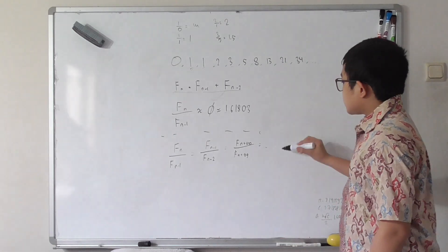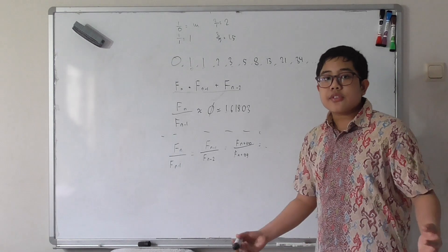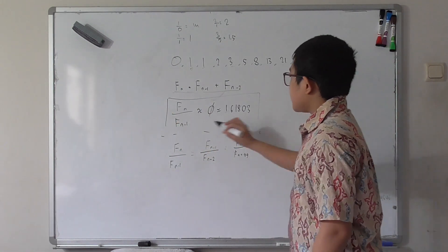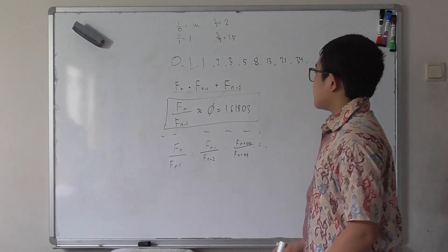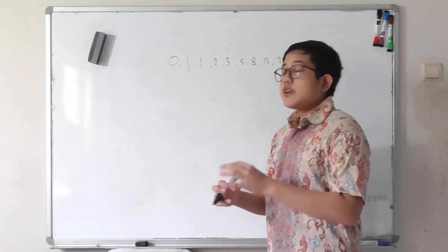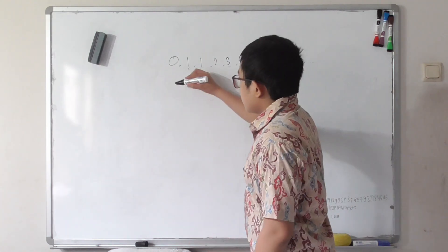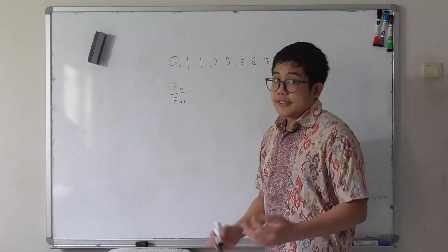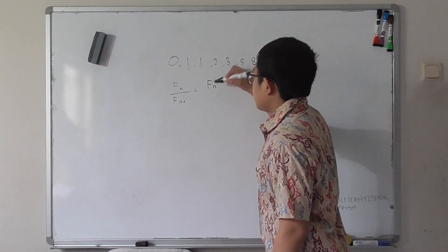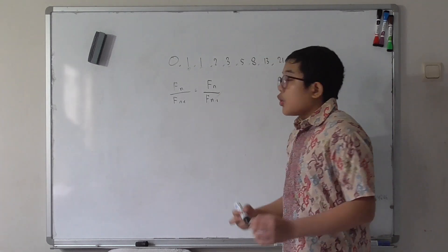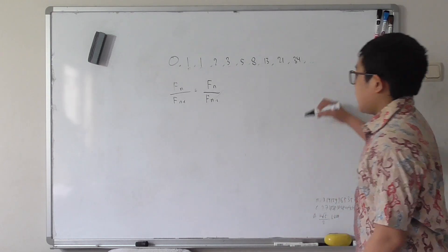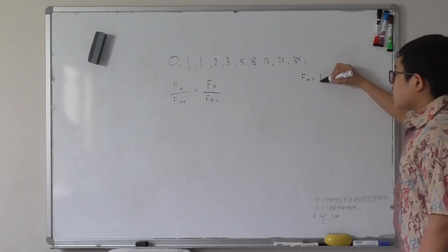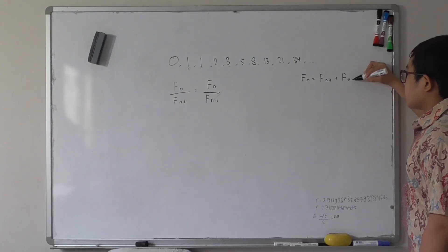These properties are very interesting, and there are quite a few others, but let's focus on proving this one — in my opinion it's the most elegant property of all. Let's take the ratio of a random value in the Fibonacci sequence: F(n) divided by its previous term F(n-1). We know F(n) equals F(n-1) plus F(n-2), since any value in the sequence is the sum of its previous two terms.